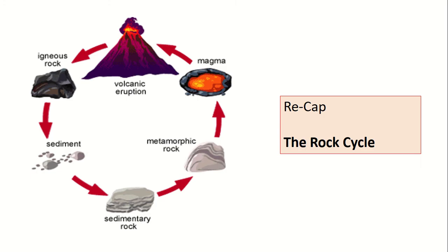As a bit of a recap from our first lesson of this term, we were looking at something called the rock cycle. The rock cycle was a really important concept because it told us how certain rocks were formed. We talked about how volcanic eruptions cause the formation of igneous rocks. Those igneous rocks can break down into sediment, and when that sediment forms together we get a different type of rock called sedimentary rock. And then once that igneous and sedimentary rock is put under immense pressure or heat, it forms metamorphic rock.